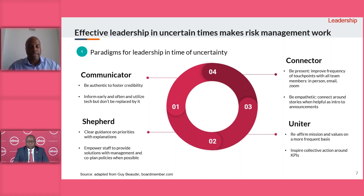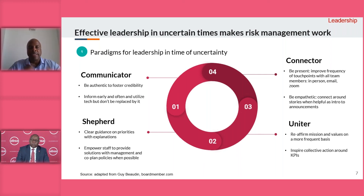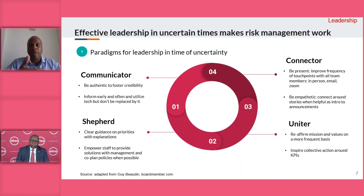Communicating not just the business risk but the implications of it for the business — so the entire team or department can begin doing their own planning. Informing early and often, shepherding your company through priorities it will face in times of change, and empowering staff to be part of the decision-making process — even in hierarchical firms — makes a real difference. Being a connector means being truly present with your team. Tools like Zoom and Webex help, but they don't replace genuine presence in terms of how you communicate and connect. Being empathetic is also critical.